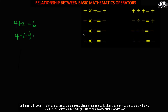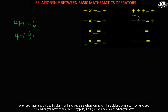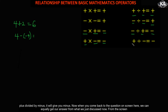Minus times plus gives us minus, and plus times minus gives us minus. Now equally for division: when you have plus divided by plus it gives you plus, when you have minus divided by minus it gives you plus, when you have minus divided by plus it gives you minus, and when you have plus divided by minus it gives you minus.